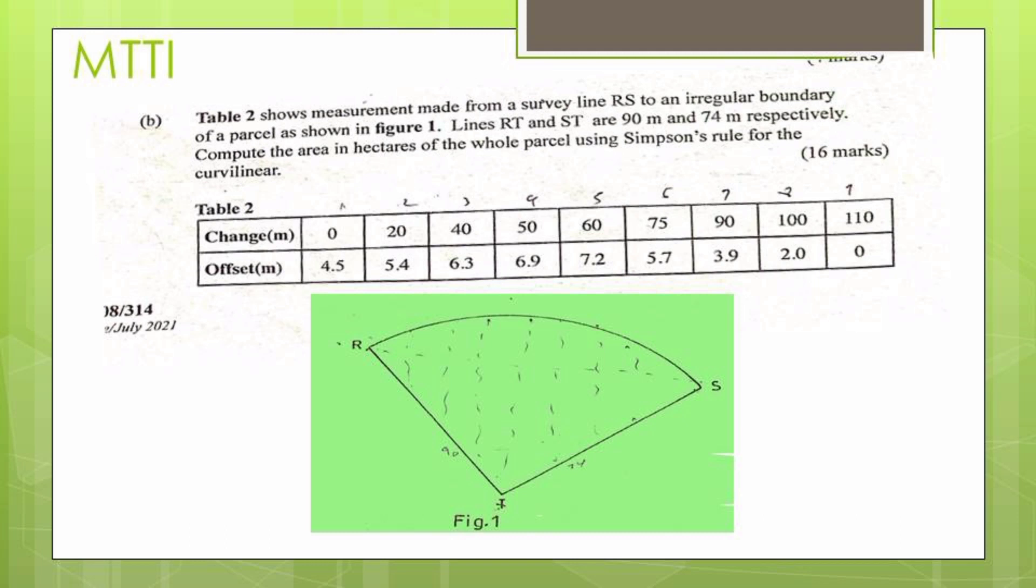Let's go to the question paper. That is question number two. Table two shows measurement made from a survey line RS to an irregular boundary of a parcel as shown in Figure 1. Line RT and ST are 90 meters and 75 meters respectively. Compute the area in hectares of the whole parcel using Simpson's rule for the curvilinear.